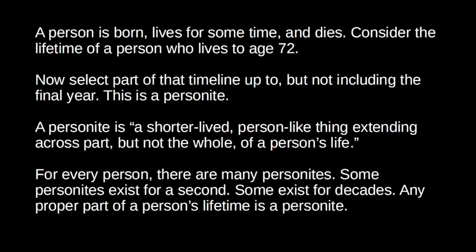A personite is something very much like a person but whose existence ends a year before biological death. As Johnston defines it, a personite is a shorter-lived, person-like thing extending across part but not the whole of a person's life. Whenever a person exists, indefinite numbers of personites exist — some for just a single second, some for years. Anytime you select part of a person's life, this is a personite. The life of a person overlaps with the lives of countless personites.